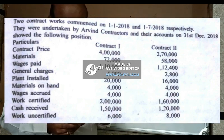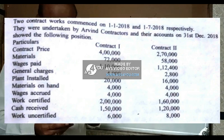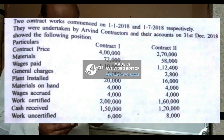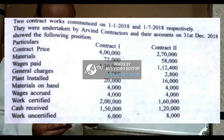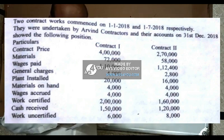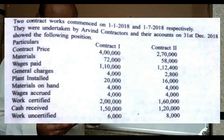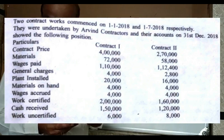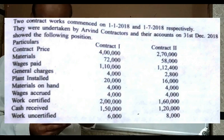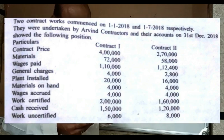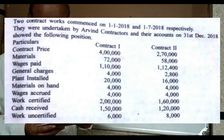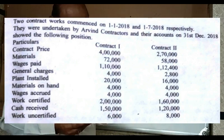Make three columns: particulars, contract one, and contract two. In the particulars column: contract price four lakh rupees for contract one, and three lakh seventy thousand for contract two. Materials used: seventy-two thousand and fifty-eight thousand respectively.